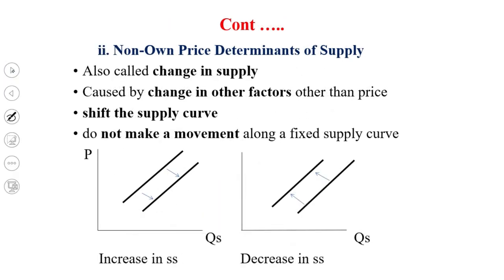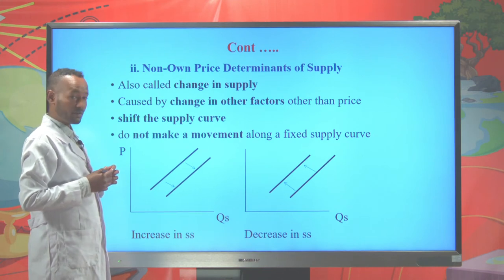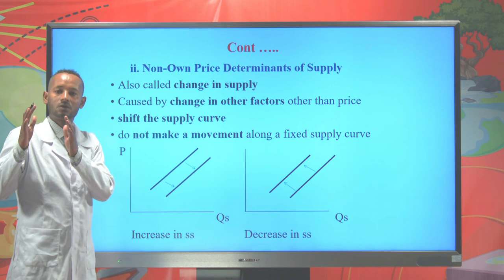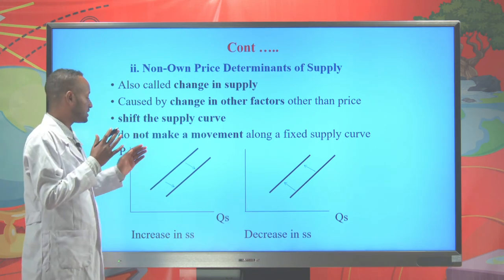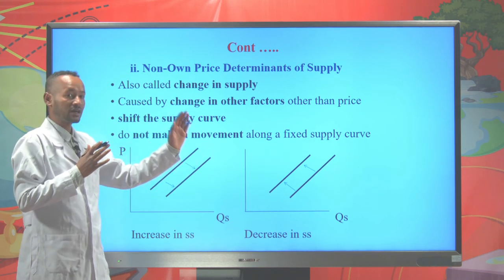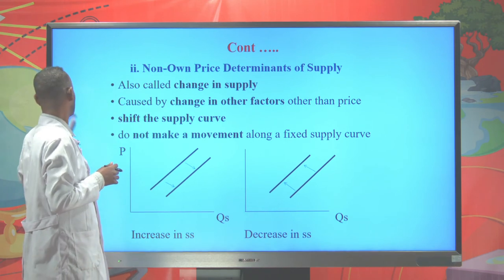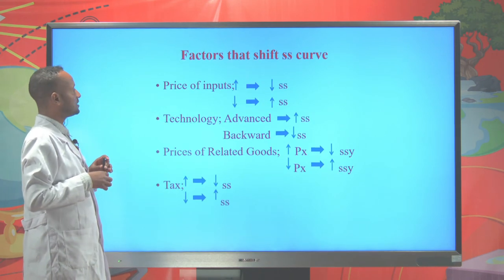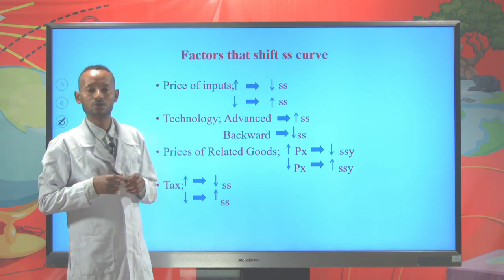Now let's see the non-own price determinants of supply, also called change in supply. These are caused by changing factors other than price of a commodity, and they shift the supply curve either to the left or to the right. Any factor that increases supply of a commodity shifts the supply curve to the right, and those factors that decrease supply shift the supply curve to the left. Let's see these factors.